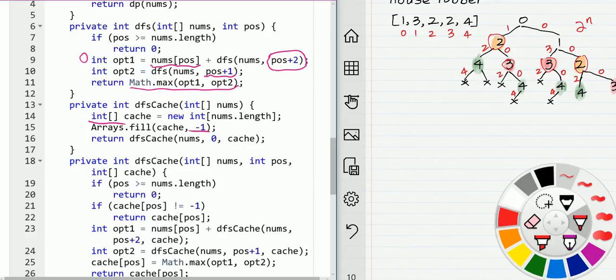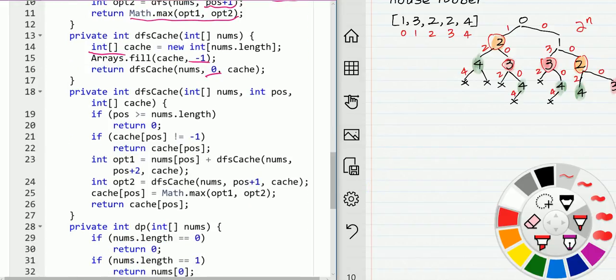...initialized with -1. We start from index 0. If the index reaches the end of the array, we just return 0. Otherwise, if the cache is not -1, which means we already know the result, so we just return here. Otherwise, we have option 1: for option 1, we rob that house, that's the money we get...